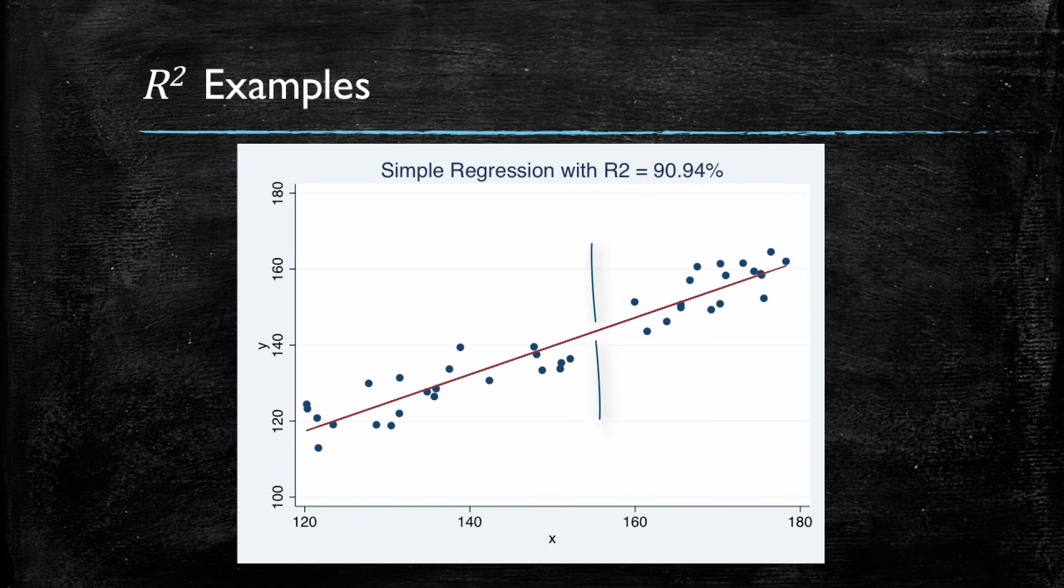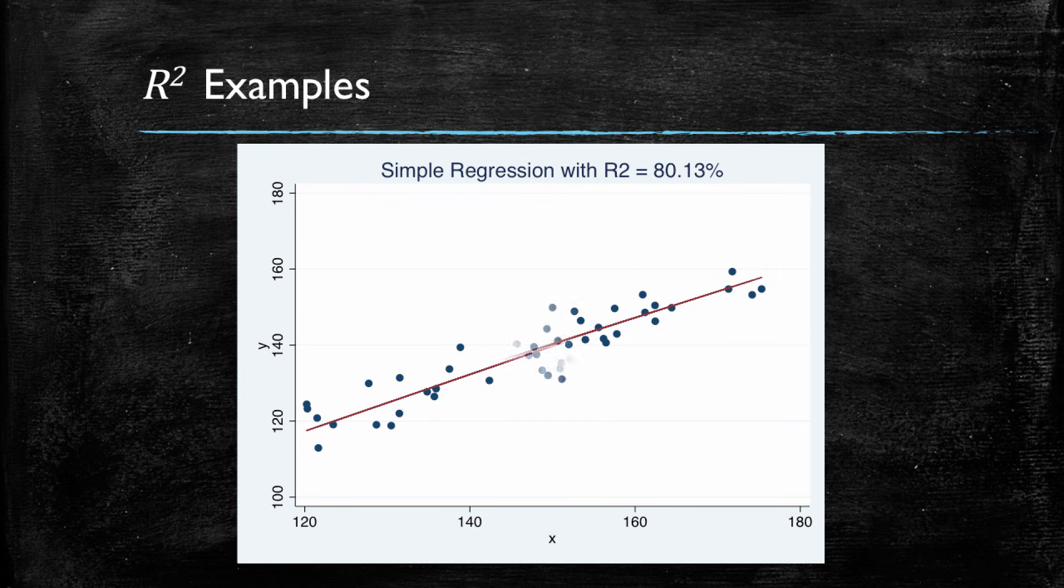In a model where there would be a greater variance across the Y's that we cannot explain, our R squared is going to drop. In this case, we have an R squared of 90%. And note that the distance between the observations and our fitted values are greater than in the prior model. As the R squared decreases, in this case we have an 80%, the distance continues growing.